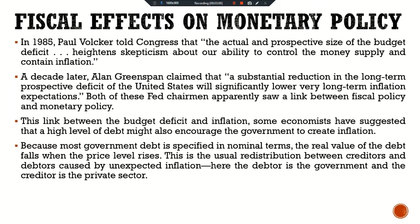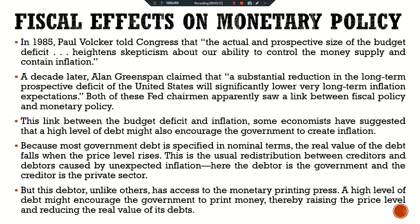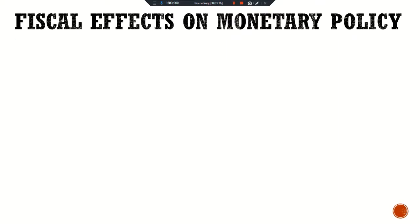This is the usual redistribution between creditors and debtors caused by unexpected inflation. Here the debtor is the government and the creditor is the private sector. But this debtor, unlike others, has access to the monetary printing press. A high level of debt might encourage the government to print money, thereby raising the price level and reducing the real value of its debt.